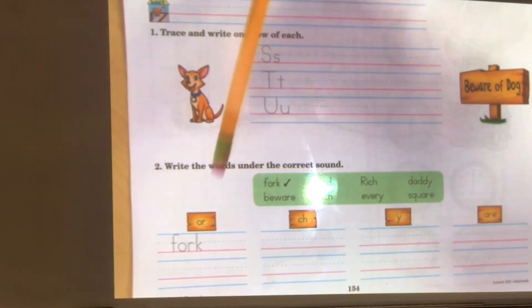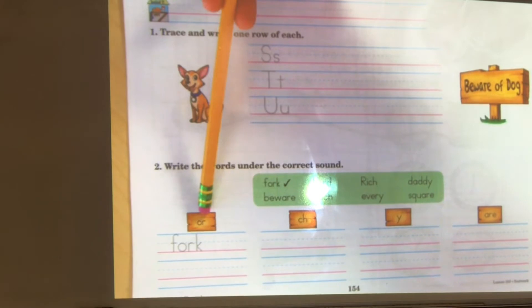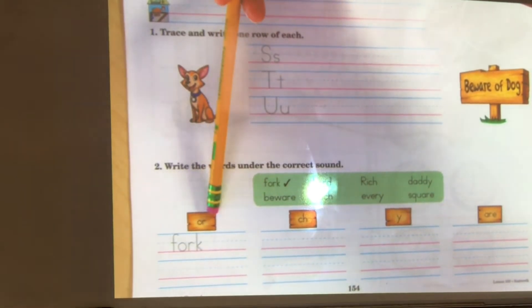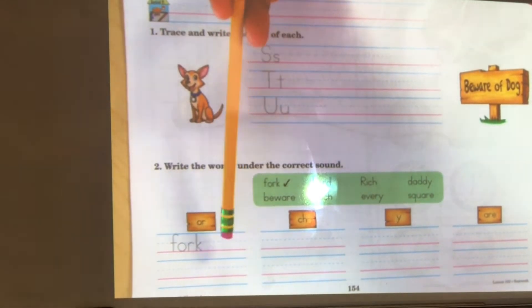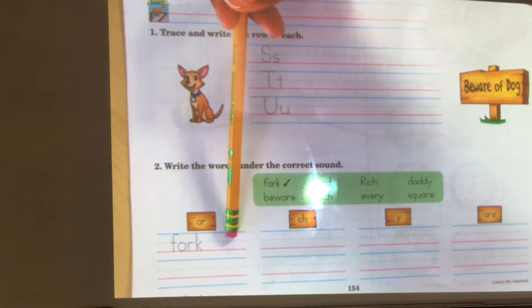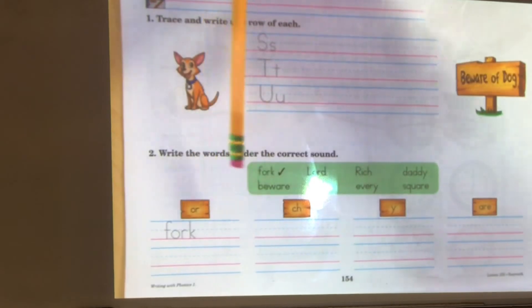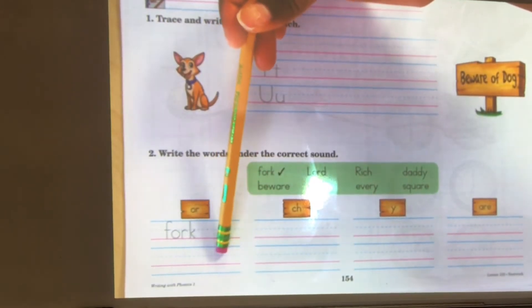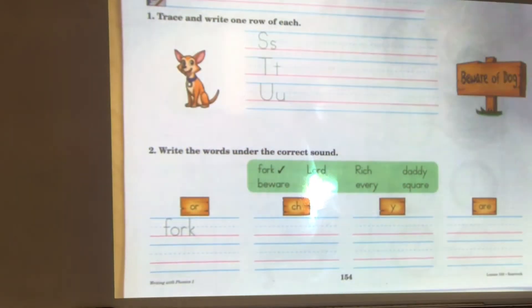Now the first one is done for you. OR, fork has OR in morning. So here it goes under OR in morning. Go ahead and trace fork. And then there's one more word that has OR in morning. You look for that word and write it on the line.